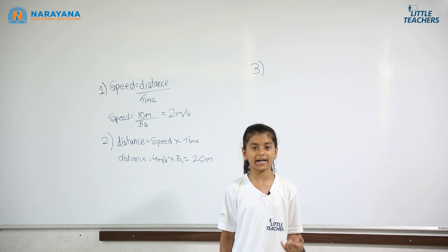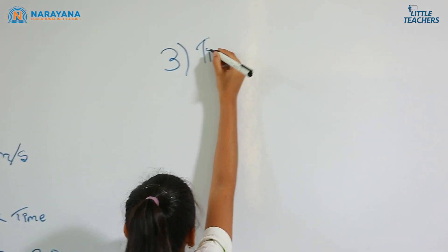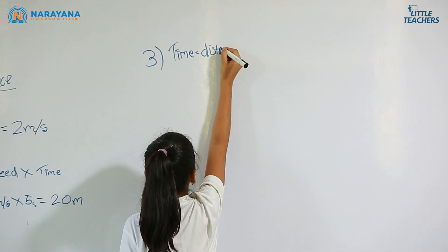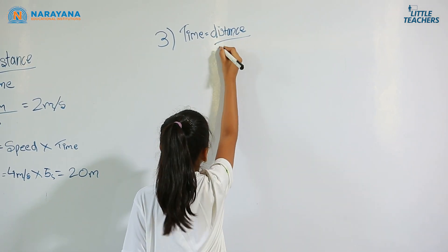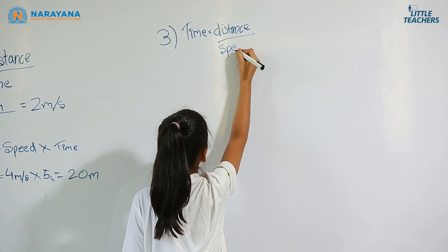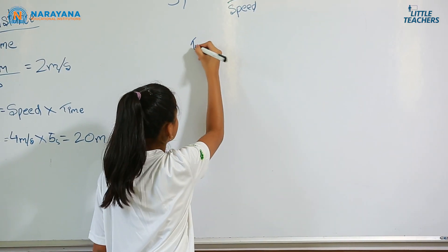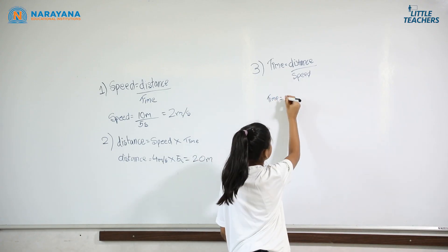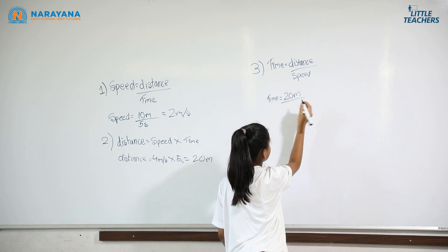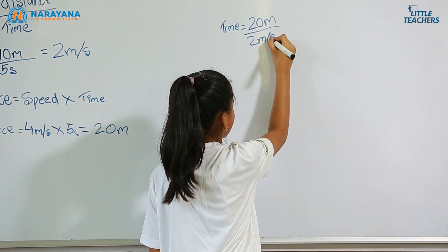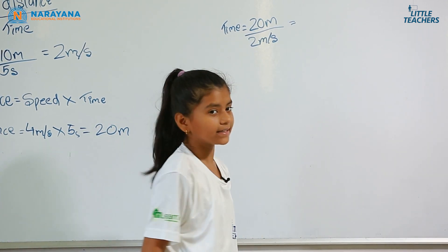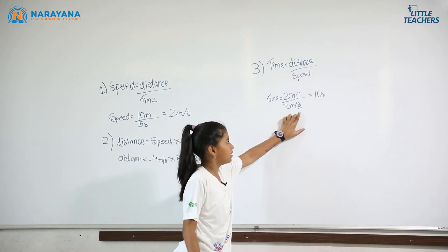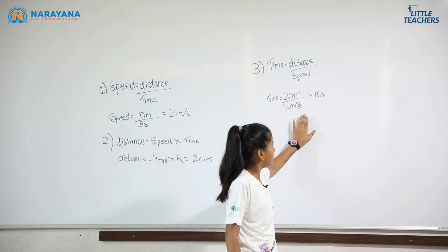Third question: we have to find time. The formula for time is Time = Distance / Speed. The car's distance is 20 meters and the speed is 2 meters per second, so time equals 20 divided by 2, which is equal to 10 seconds.